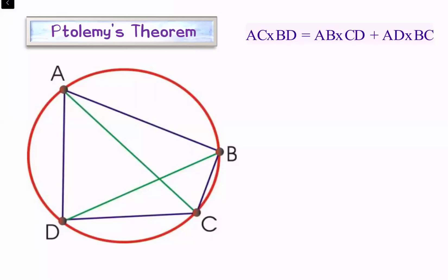Today we'll check what is Ptolemy's theorem and what is its proof. Ptolemy's theorem states that in a cyclic quadrilateral, the sum of product of opposite sides—so we are doing here AB times CD plus BC times AD.